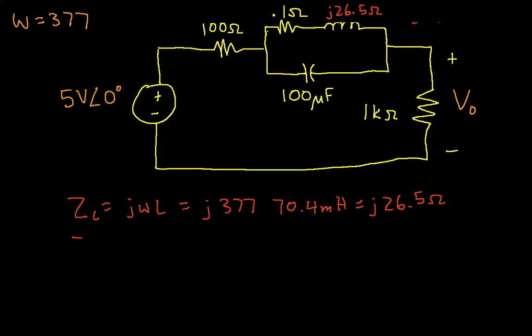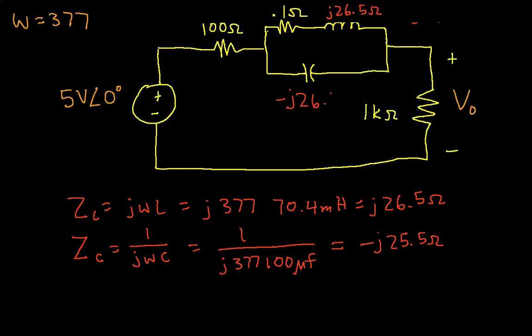Our capacitor impedance ZC is 1 over jωC, which I can write this way. I multiply out the 377 by 100 microfarads, and I get minus j26.5 ohms. I can replace this capacitance with minus j26.5 ohms. So I've completed step two of the AC steady state analysis. Step three is actually to do the analysis, so let's clear out a bit of space here.